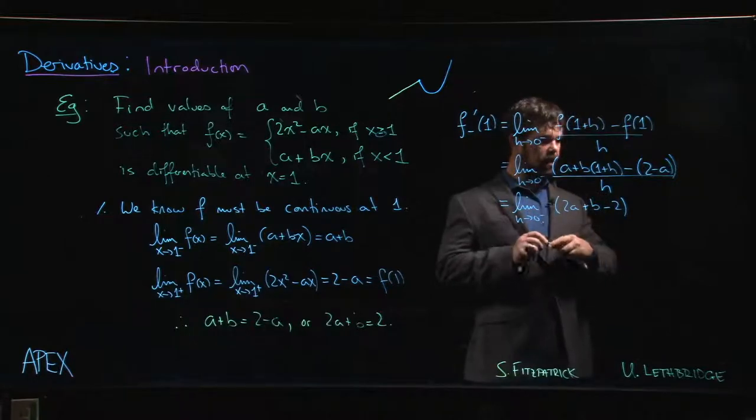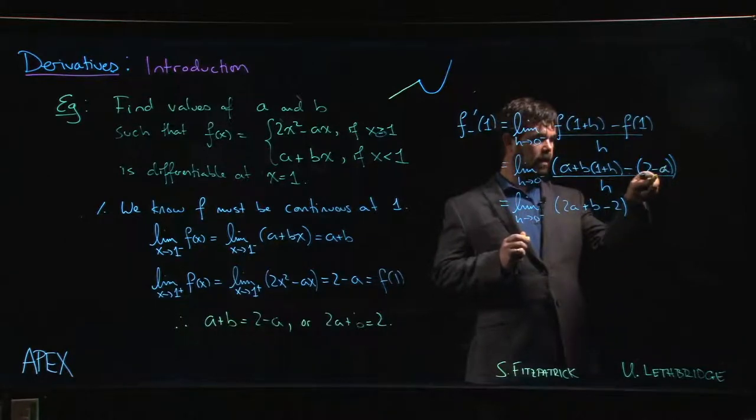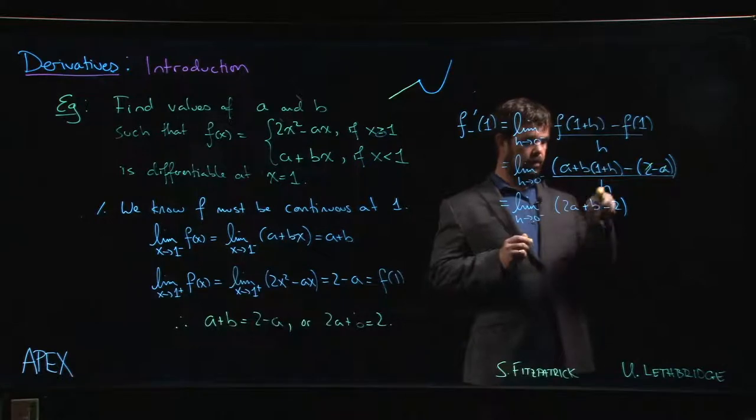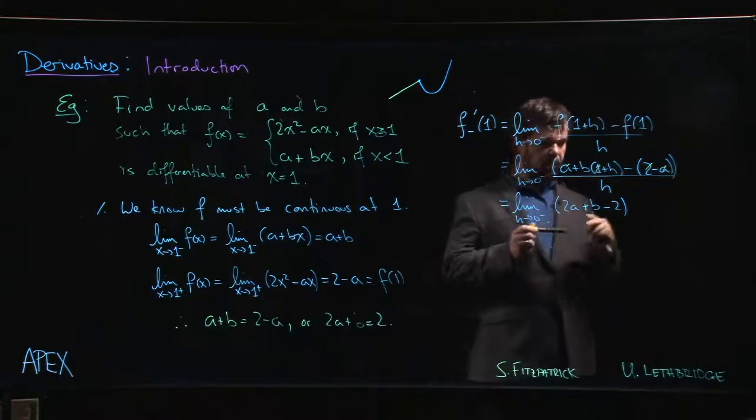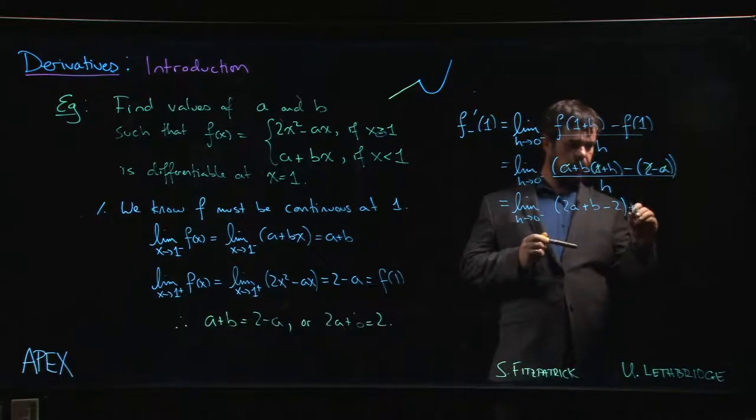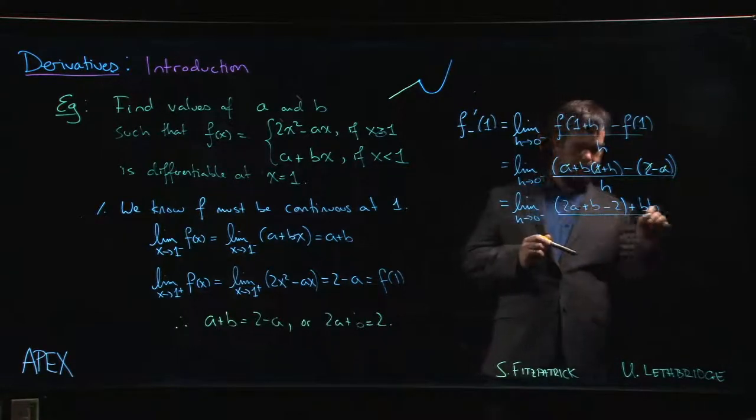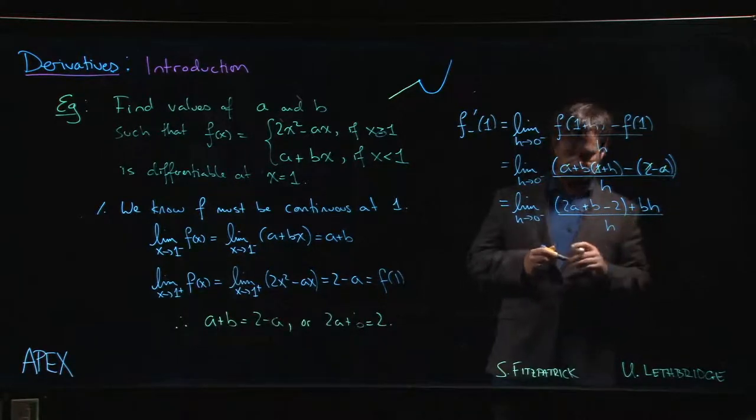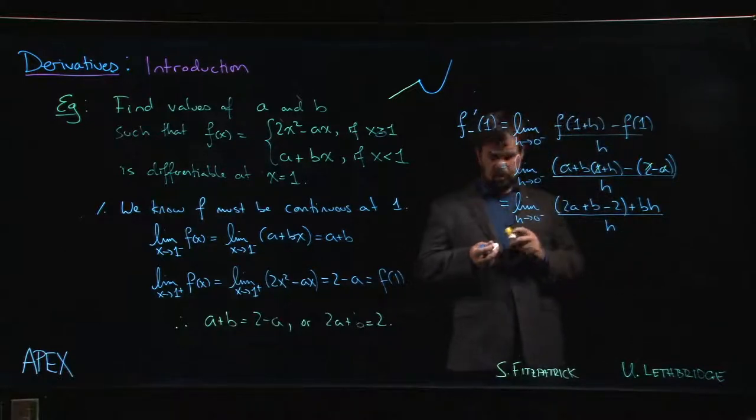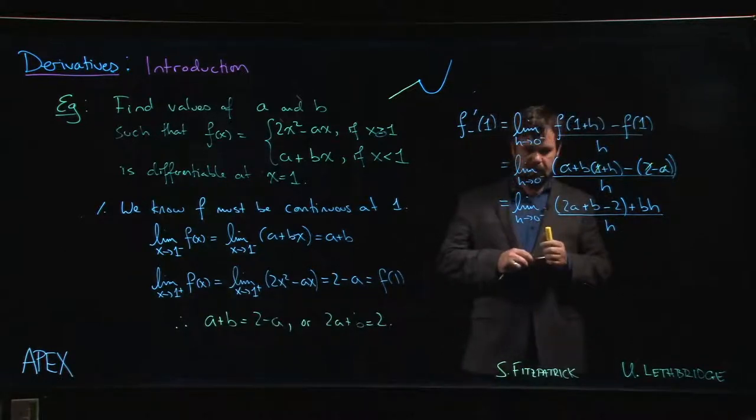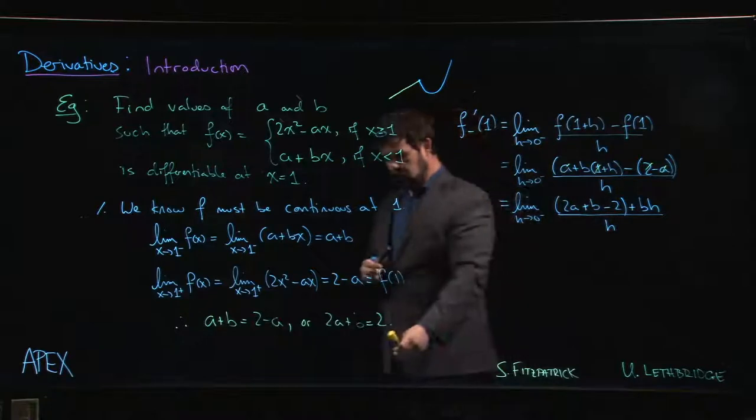2a (a minus minus a, 2a) plus b minus 2. Okay, and I've accounted now for that one. Oh but I still have bh over h.